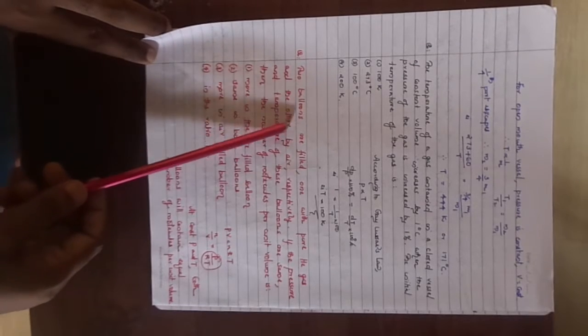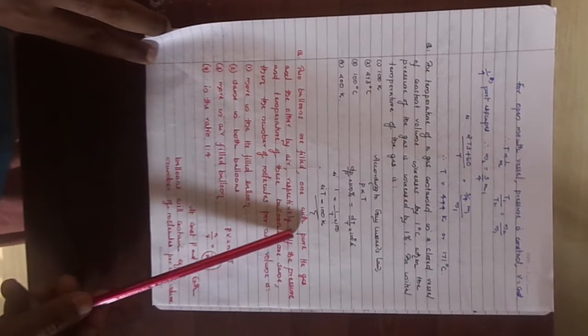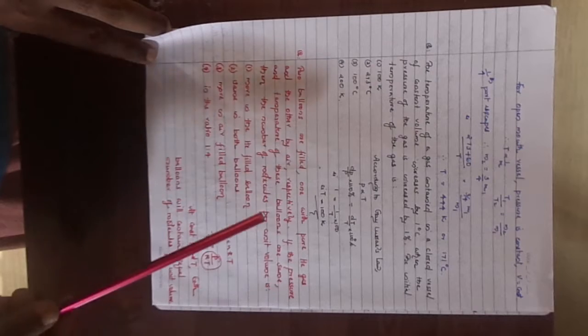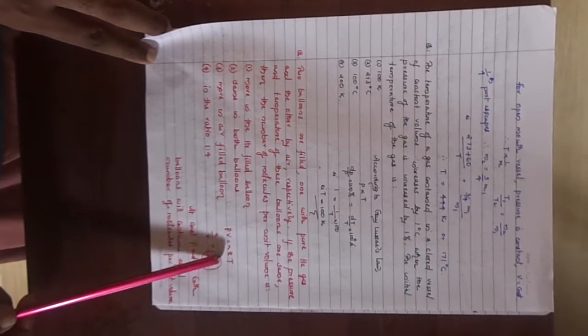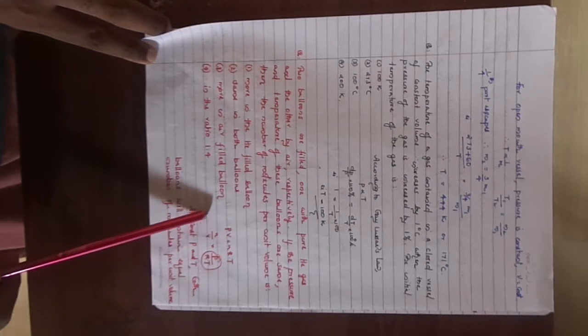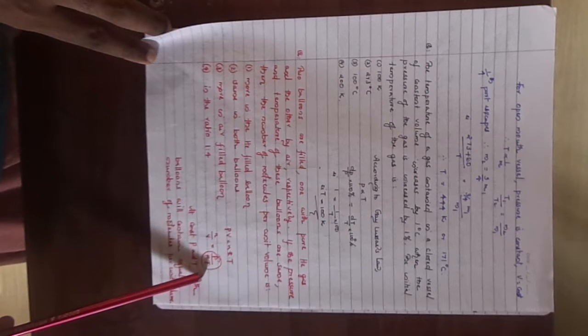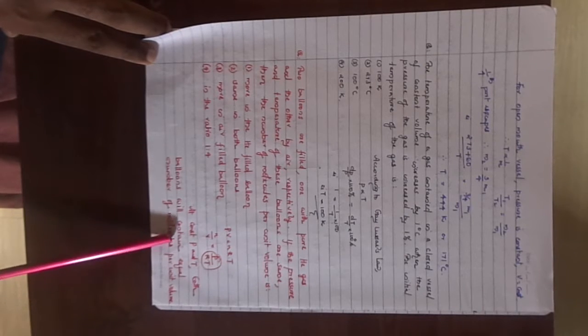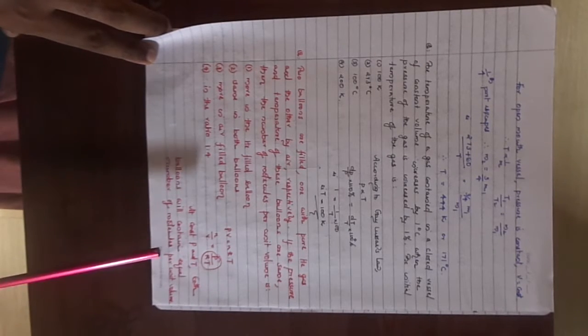And here two balloons are filled, one with pure helium gas and the other by air respectively. If the pressure and the temperature of these balloons are same, then the number of molecules per unit volume? So we can just use the gas equation P is equal to NkT. So we can write N by V, the number of molecules per unit volume equal to P by kT. P, T, k are constants. So we can say as P and T are constants, both balloons will contain equal number of molecules per unit volume.